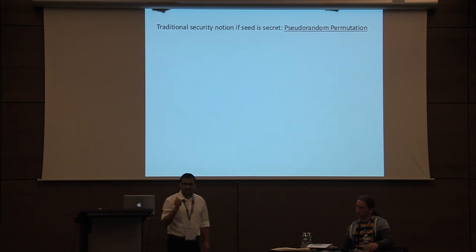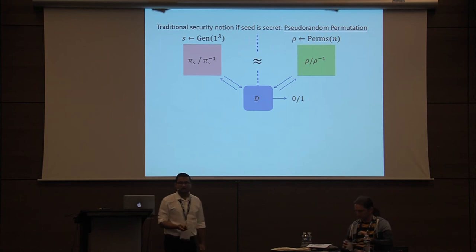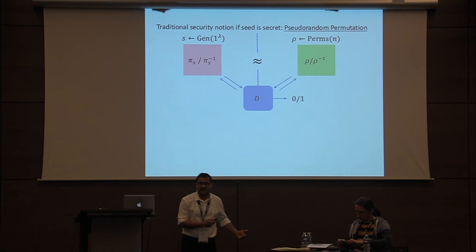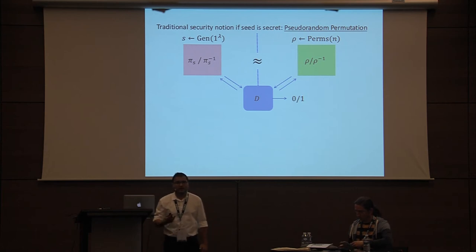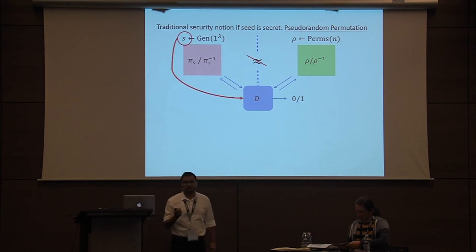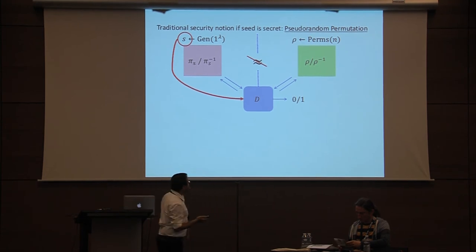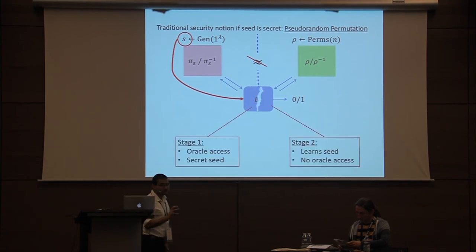When the seed is kept secret, the traditional security notion is that of a pseudorandom permutation, where an efficient distinguisher cannot distinguish if it has been given access to a permutation P under a seed S, or to a random permutation and its inverse. But here the seed is kept secret. If you give the seed to the distinguisher, the notion of PRP completely breaks down. Informally, the way we define security in the public seed case is we split the distinguisher into two stages.